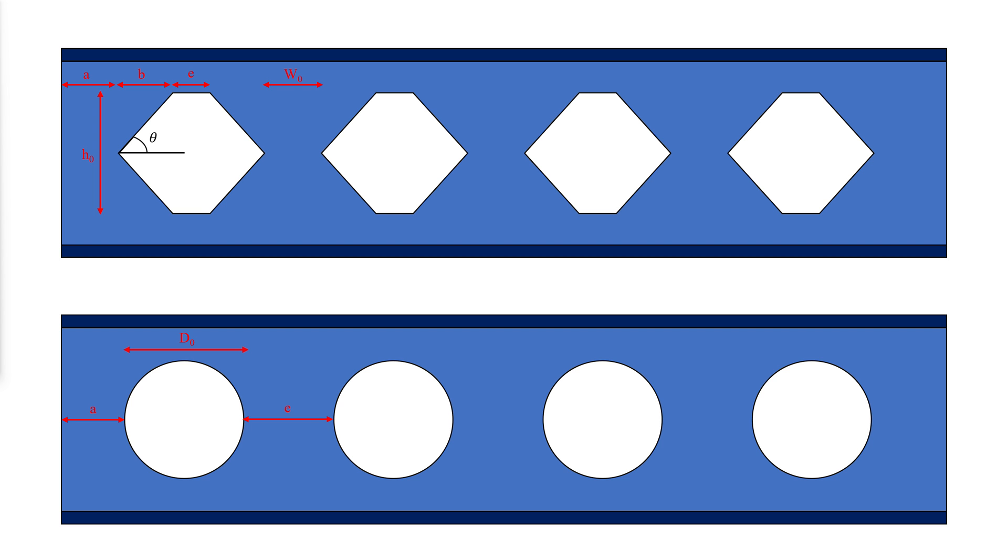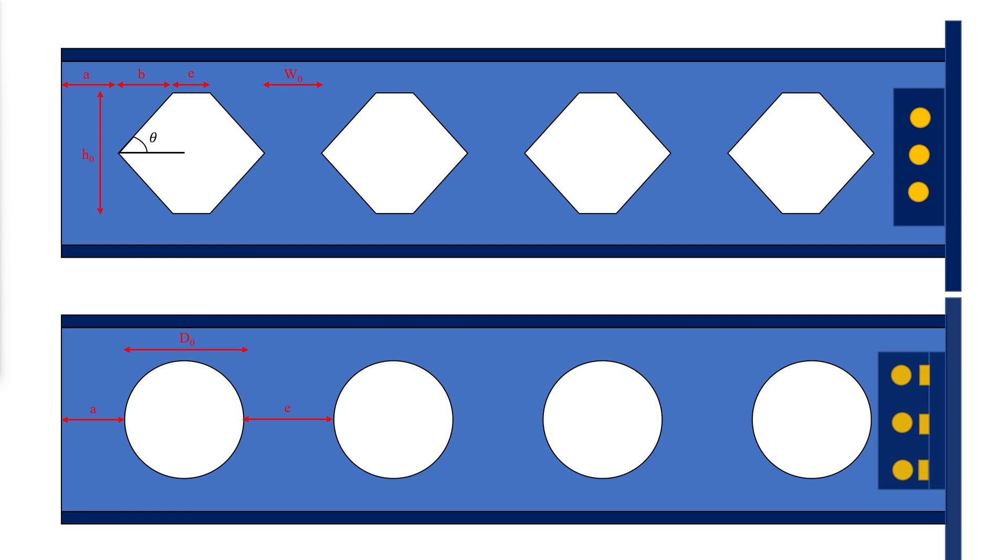The types of end connections used for castellated and cellular beams are no different than those used for wide flange beams. Typical connections used are shear tabs, double angles, and single angles. It is standard practice to adjust the opening pattern when possible to allow for full web post width at the end of each beam.